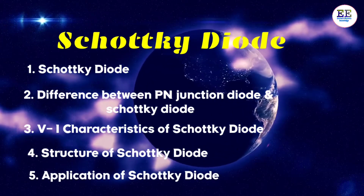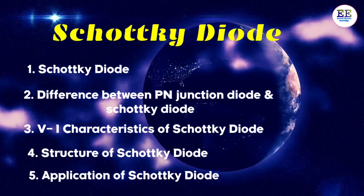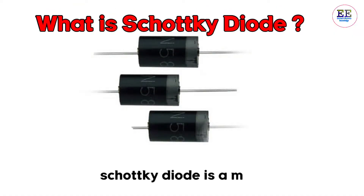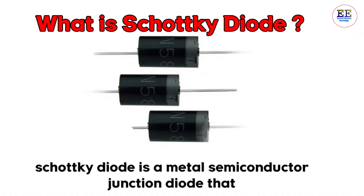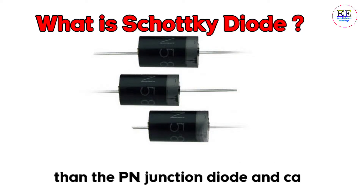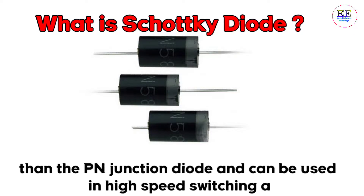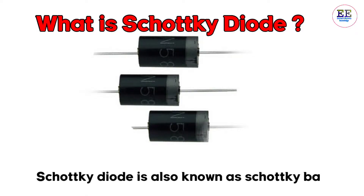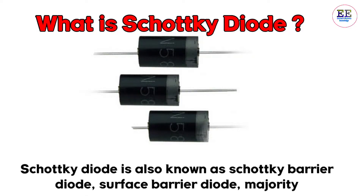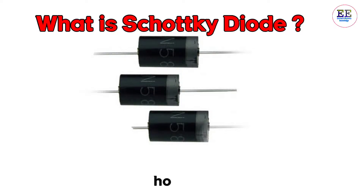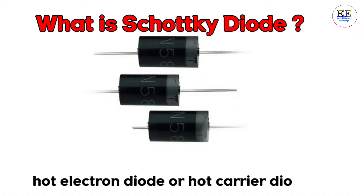So what is a Schottky diode? A Schottky diode is a metal-semiconductor junction diode that has less forward voltage drop than the PN junction diode and can be used in high-speed switching applications. The Schottky diode is also known as the Schottky barrier diode, surface barrier diode, majority carrier device, hot electron diode, or hot carrier diode.